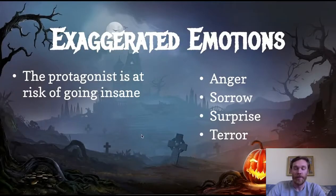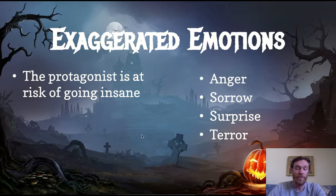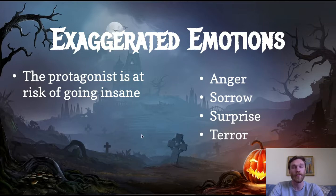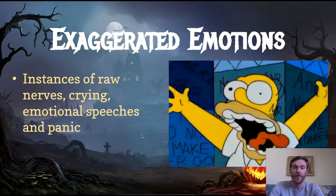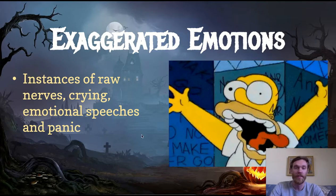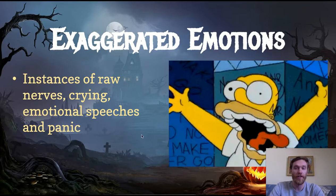You can watch an example from The Simpsons to see that element in action. The next element is exaggerated emotions. The protagonist is at risk of going insane — they are probably really paranoid and experiencing extreme emotions: anger, sorrow, surprise, terror. If you see instances of those emotions, write them down. We'll see emotional speeches, characters panicking, raw nerves, crying. Write down the specific instance when that happens on your sheet.